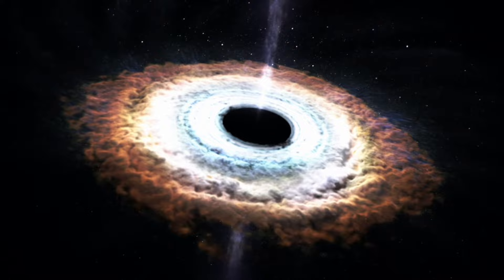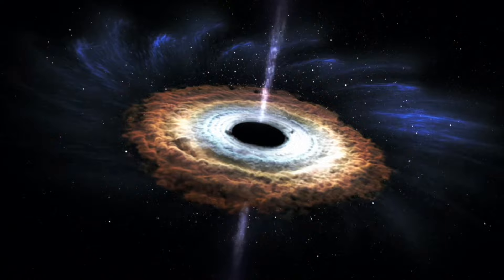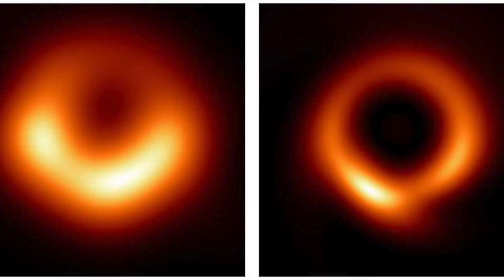A collection of stars in close proximity to Sagittarius A-star, known as S-stars, has garnered significant attention. Primarily observed in the K-band infrared wavelengths due to the obscuring effects of interstellar dust, these stars have become a focus for understanding the nature of the supermassive black hole.